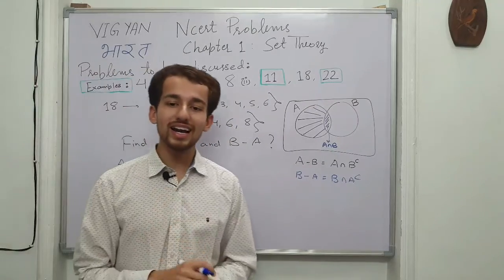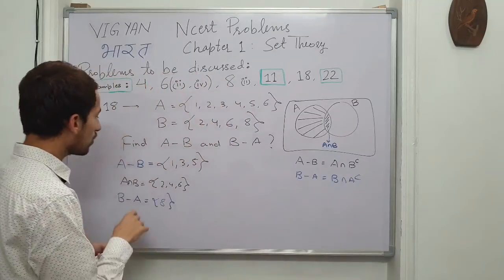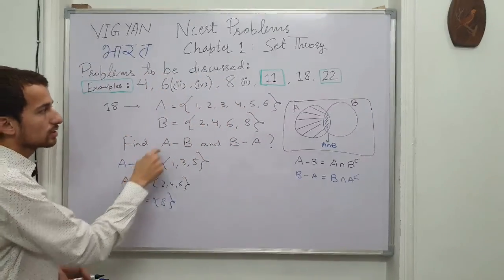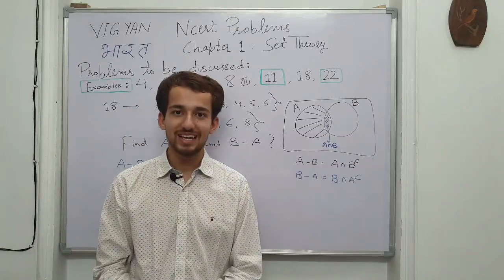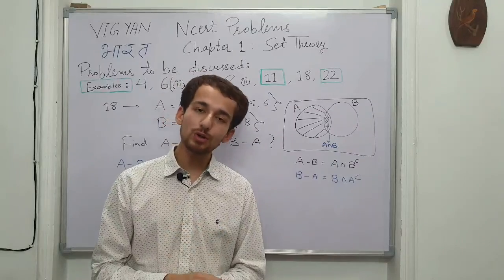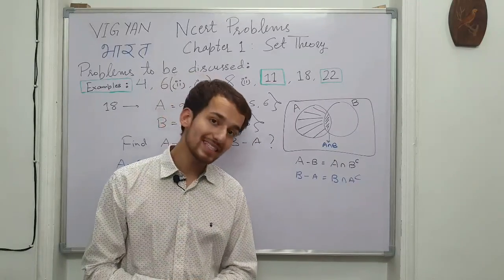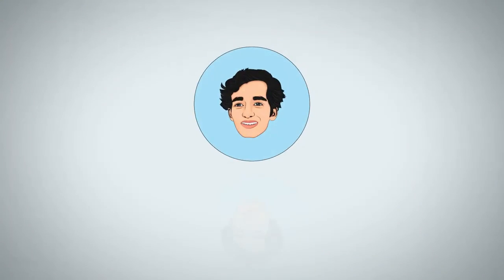Or the other way round you can understand this problem also, one more way to understand this. Now we were supposed to find A-B, so now only look for those elements of A which are not in the set B. Similarly for the set B-A, you have to look for those elements of the set B which are not present in the set A and definitely we are easily going to find it.